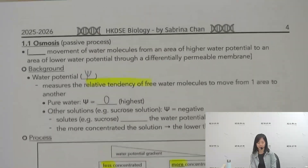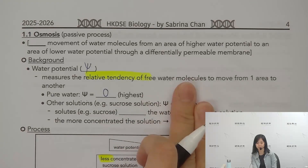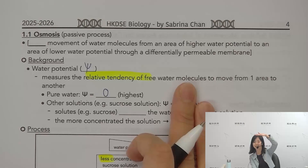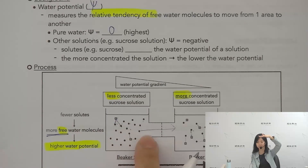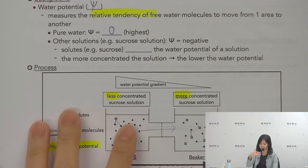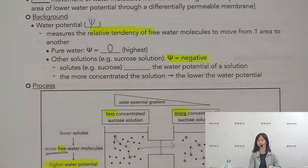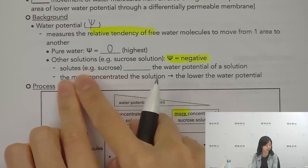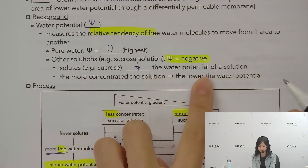I want to ask: for a sucrose solution, if you express the water potential (Ψ) as a value, what number would it be? It would be negative, right? Because 0 is the highest, but when you have a solute dissolved in water, it holds the free water molecules, so the water potential is lower. Therefore the Ψ value will be negative. Solute, like sucrose, lowers the water potential.